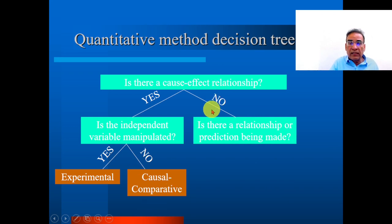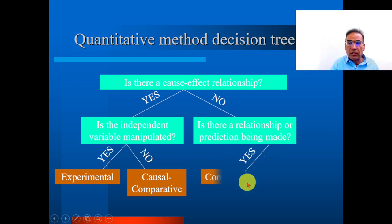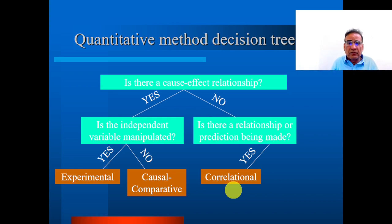On the other hand, if there is no cause-effect relationship and there is a relation or prediction being made, then it is correlational research. That is the main difference between these types of research.